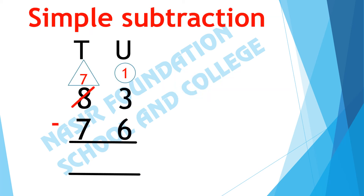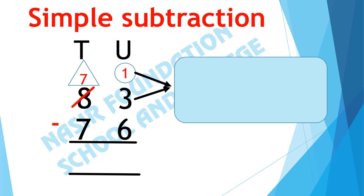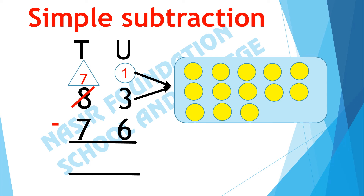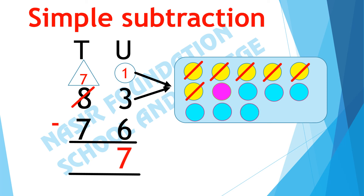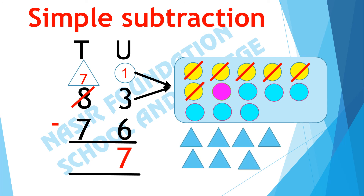Now we will subtract 6 units out of 13 units. Here we have 13 circles and we subtract 6 from them. Here we have 7 units left. Now from the tens: there are 7 tens and we have to subtract 7 tens. From 7 if we subtract 7 tens we get 0.